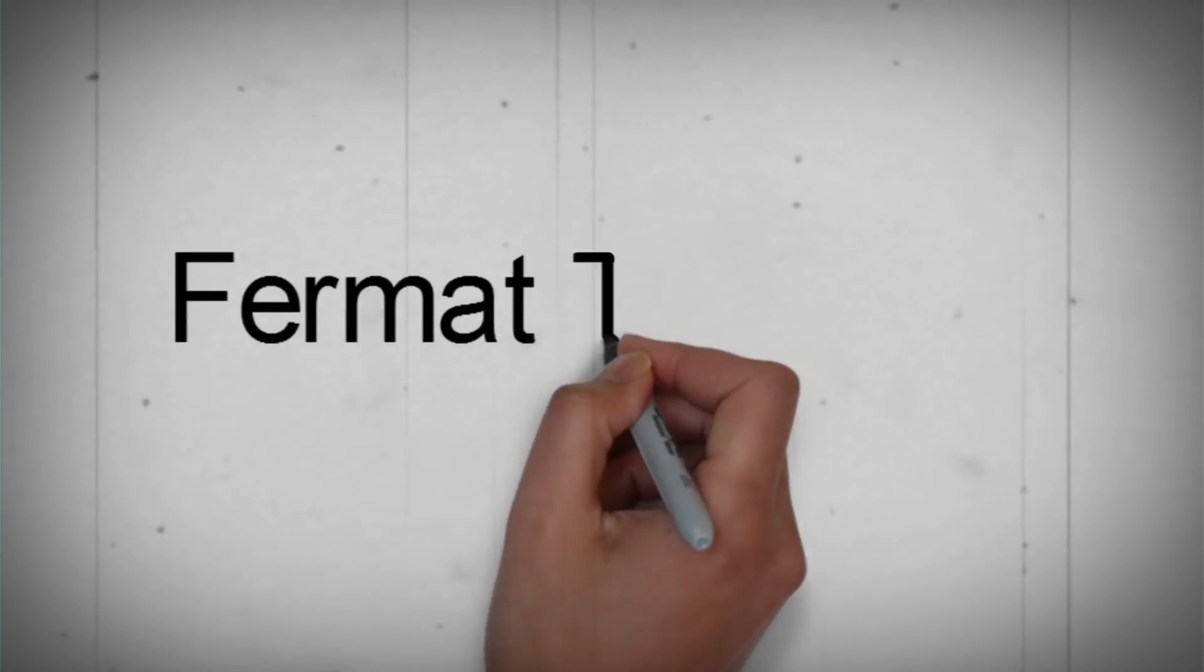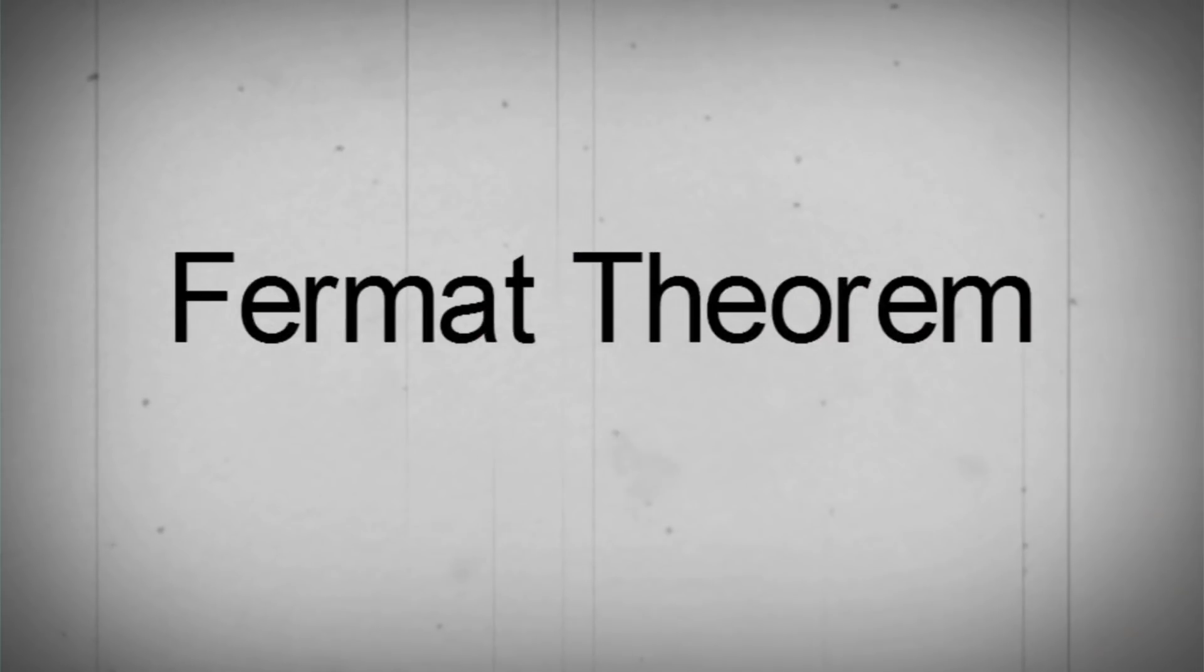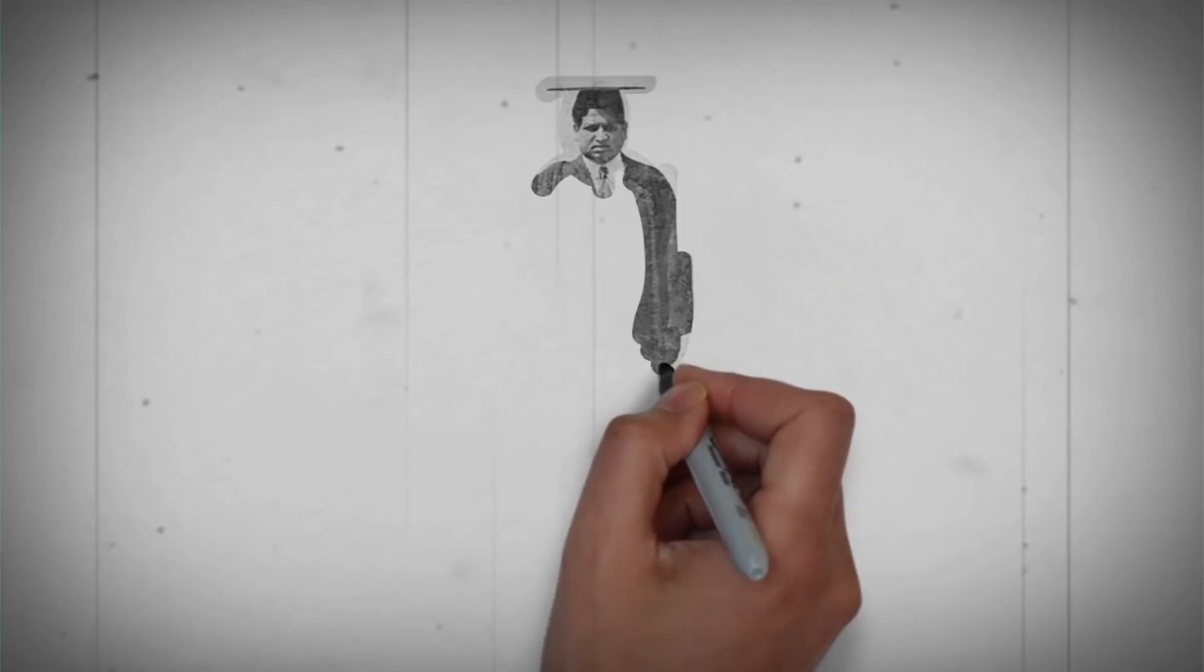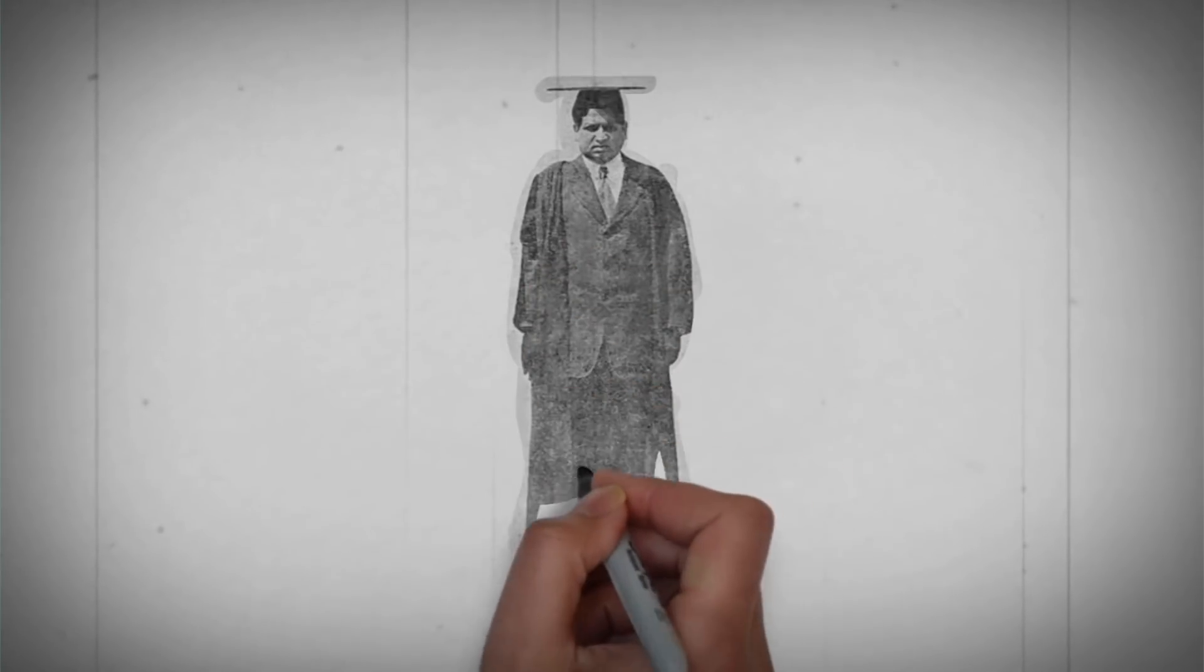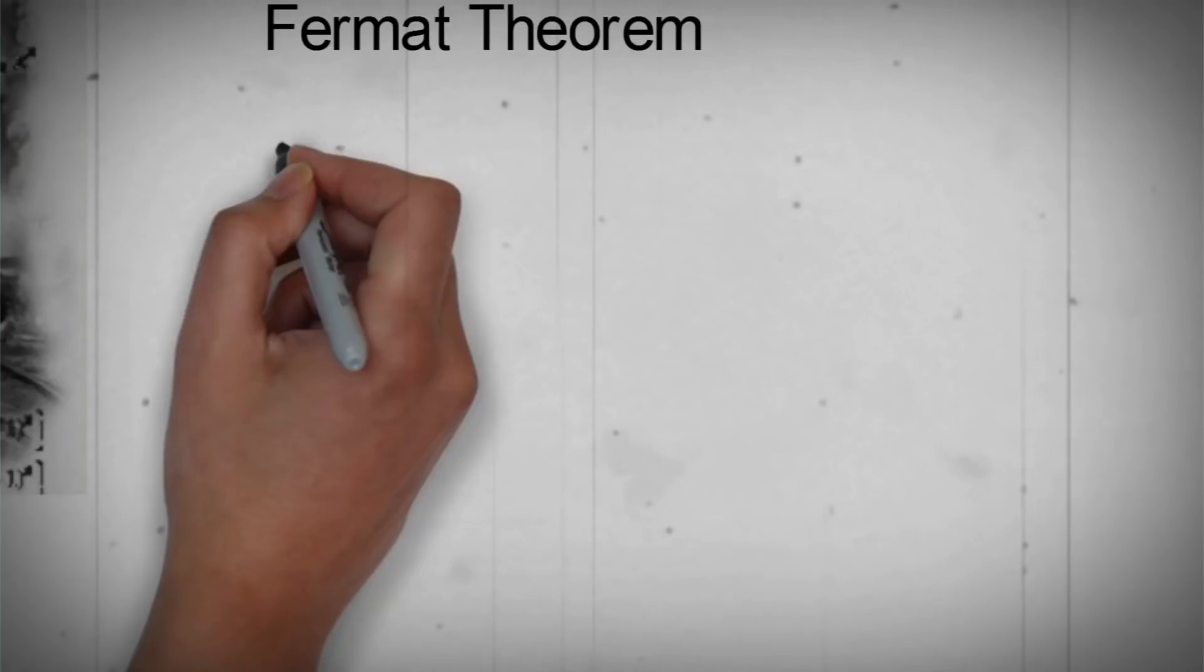The Fermat theorem. Ramanujan also did considerable work on the unresolved Fermat theorem which states that a prime number of the form 4m plus 1 is the sum of 2 squares.